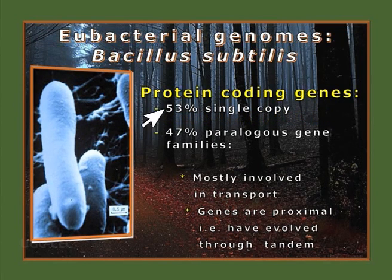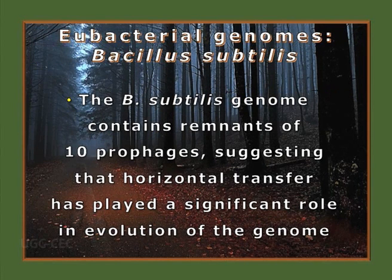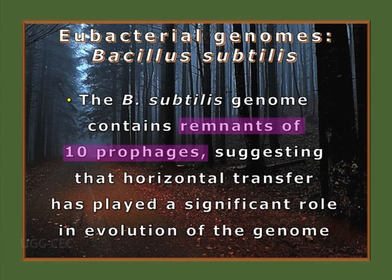Bacillus subtilis has 53% single-copy genes and is mostly involved in transport, with genes that have evolved through tandem repeats. Most importantly, we have found remnants of 10 prophages within the Bacillus genome, indicating horizontal gene transfer that plays an important role in the evolution of the genome.